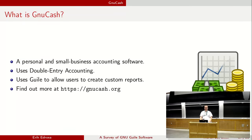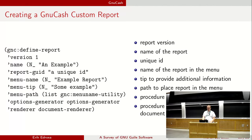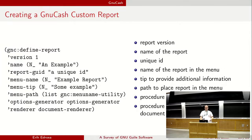The next project is GnuCash. It's a personal and small business accounting software that uses double-entry accounting. It uses Guile to allow users to create custom reports. There's a 'define-report' where you give it a bunch of arguments providing the version, the name, and various other things for the report. The arguments use a symbol followed by a value — sort of like a property list from Lisp. The most important parts are the options generator and the renderer, which are used to configure your report and then render what it displays on screen.